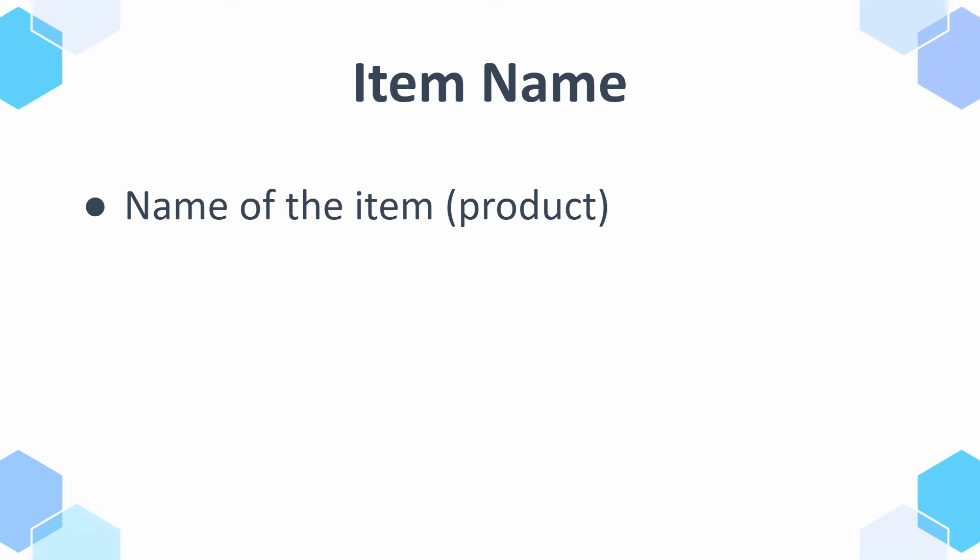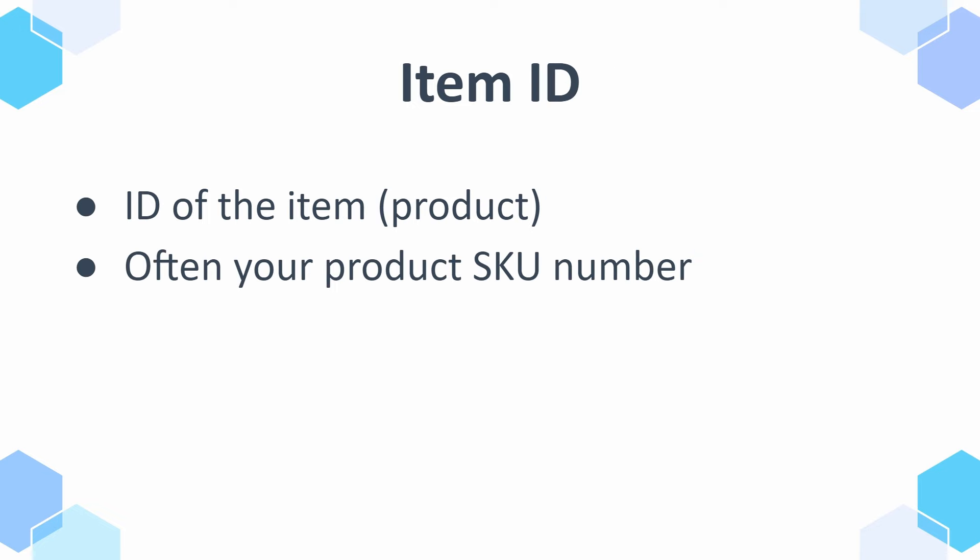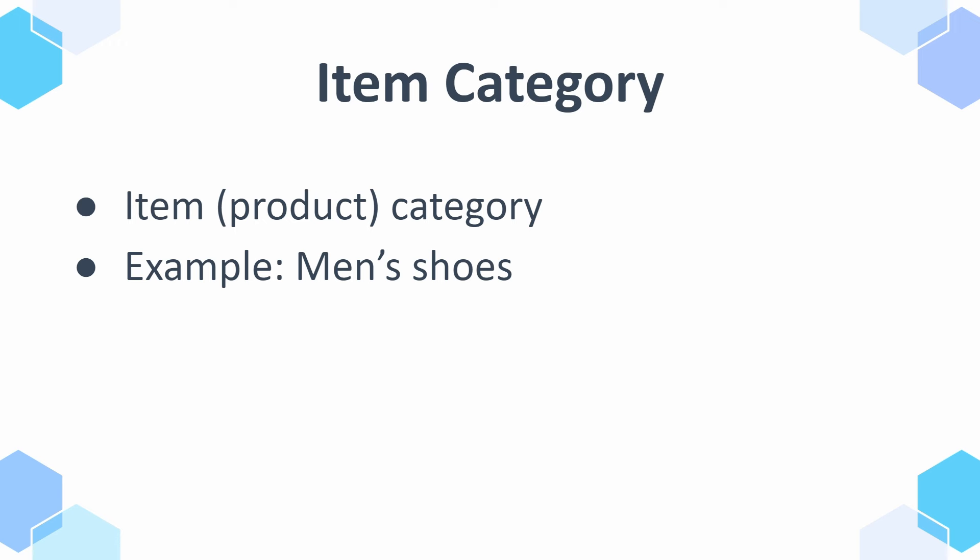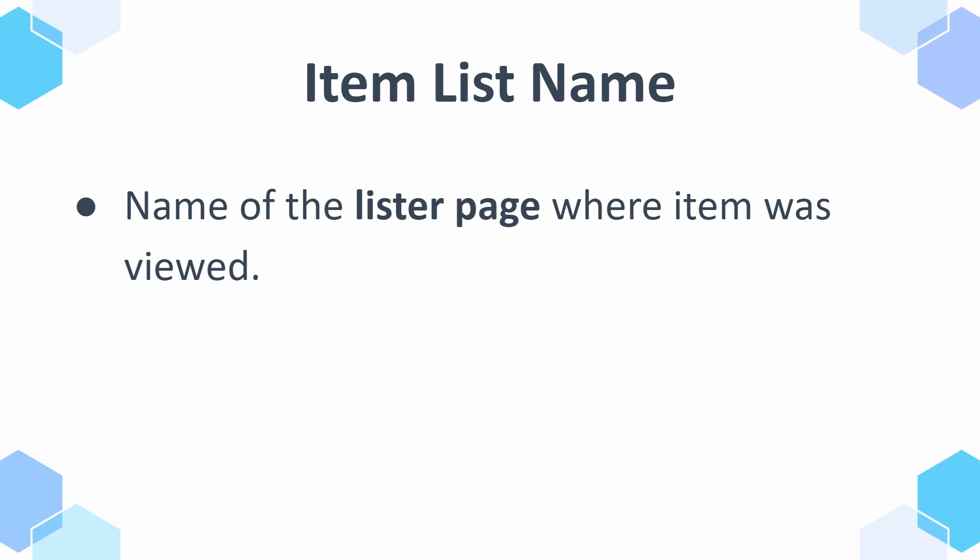Then we have item name, which is basically the product name. We have item ID, which is the product ID — in most e-commerce cases it will be the product SKU number. In many companies it's easier to look at the SKU number than just the product name, since names are sometimes similar for different variants. Then we have item category, which is the overall category for the product — for example, a running shoe for men might have the category 'men's shoes'. Then item list name, which is just the name of the lister page where the item was viewed or clicked.